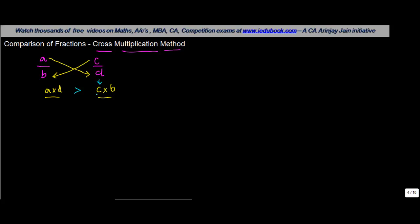...then the way you need to remember this is that the fraction whose numerator is in the front and which is greater. So let's say in this case a into d is greater and a which is the first numerator is that of fraction 1. So in that case a upon b will be greater.